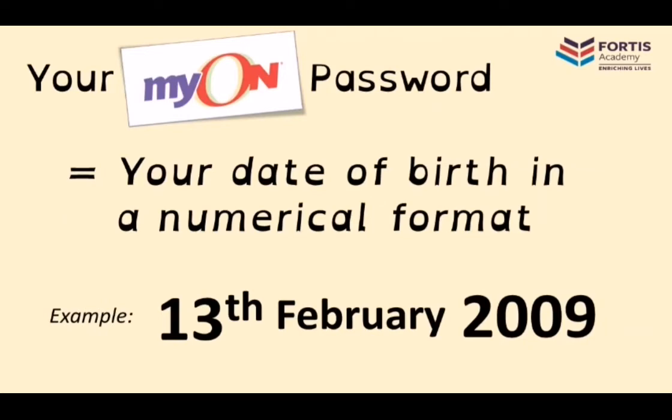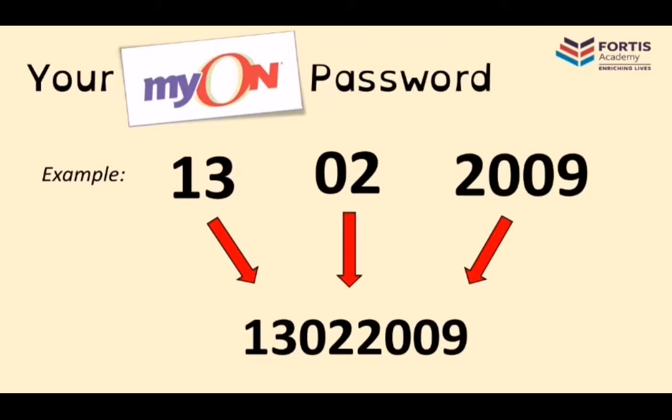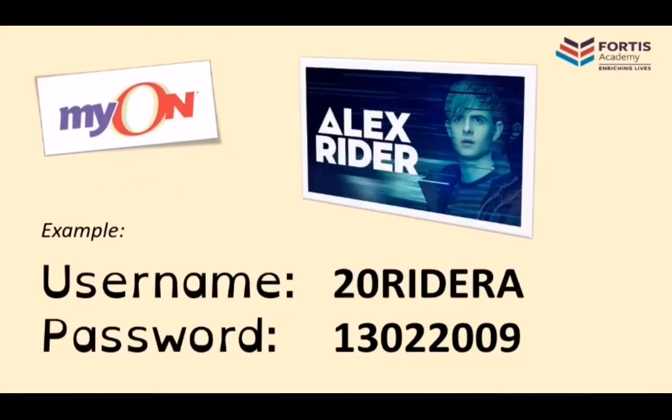You need to do the same for your own name. Then you're going to need a password - this will be your date of birth in a numerical format, just as a number. Alex Rider's birthday is on the 13th of February and we're going to assume he was born in 2009, so we take 13, then 02 for the second month February, and 2009, and put those numbers together to make up the password.